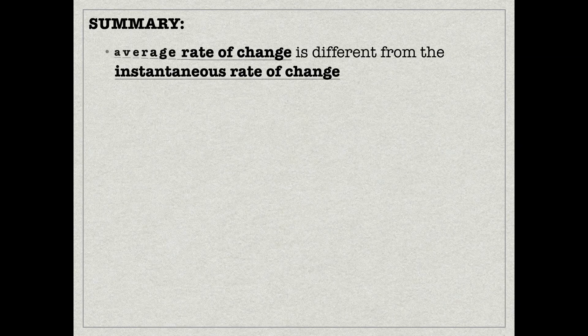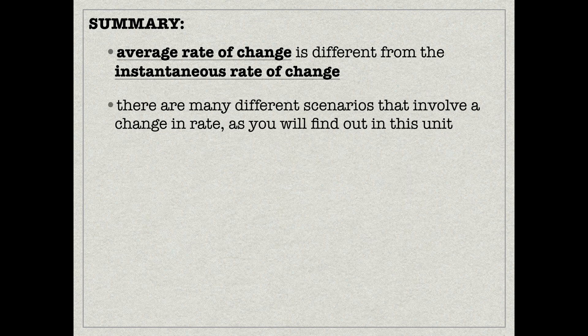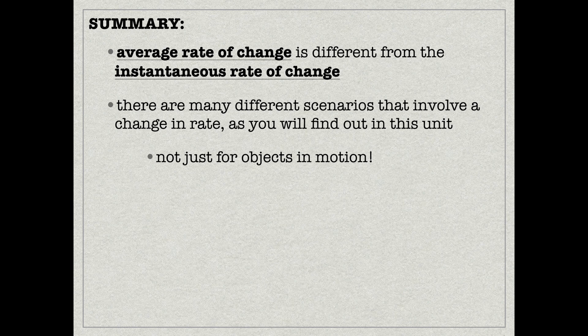In summary, we have two different things: average rate of change — the slope between any two points on a graph — and instantaneous rate of change — the derivative of the function at a specific point. There are many scenarios involving rates of change in this unit, not just objects in motion, though those will feature heavily. Your assignment is on pages 264 to 265. Good luck.